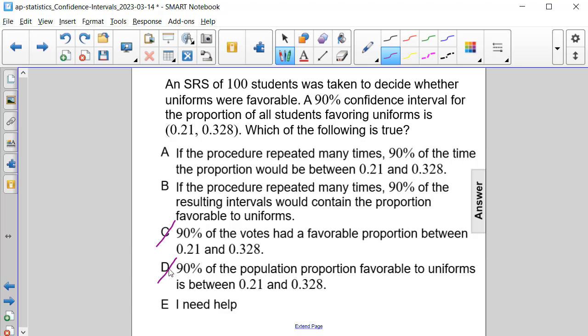So again, that's why C and D can be ruled out. Now let's look at answer choices A and B. If the procedure is repeated many times, 90% of the time the proportion would be between 0.21 and 0.328. Or is it choice B? If the procedure is repeated many times, 90% of the resulting intervals would contain the proportion favorable to the uniforms.